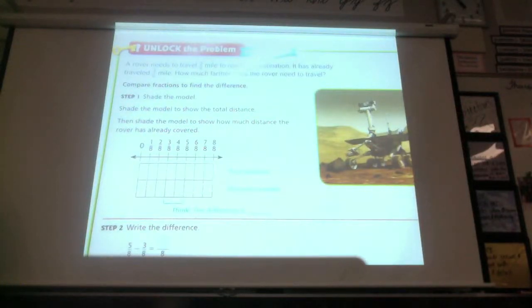A rover needs to travel five-eighths of a mile to reach its destination. It has already traveled three-eighths of a mile. How much farther does the rover need to travel?